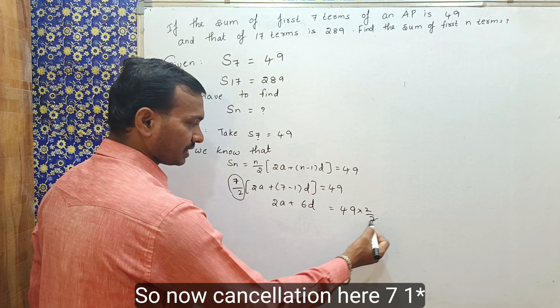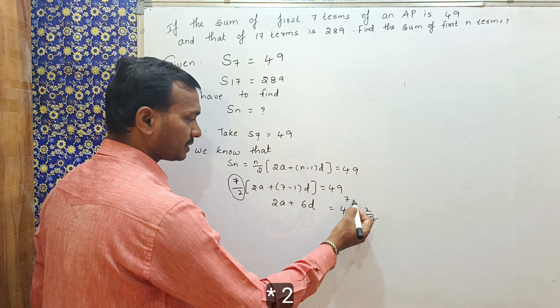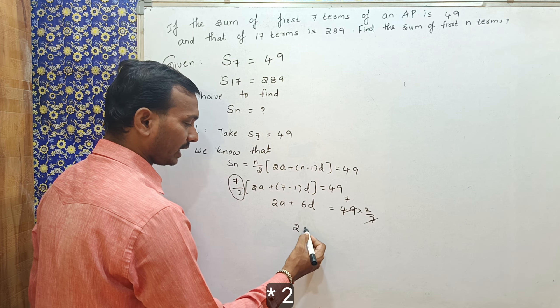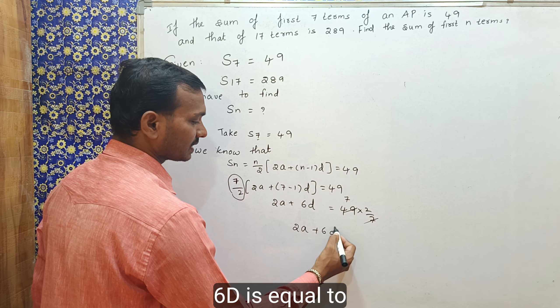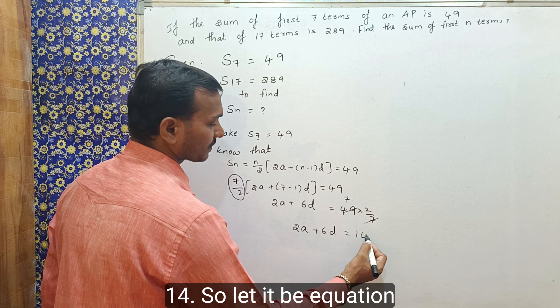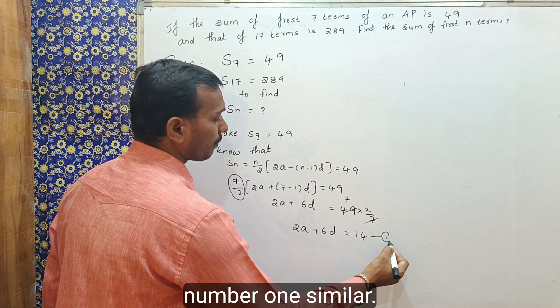So, now cancellation here, 7, 1 times 7, 7 times 2a plus 6d is equal to 40. So, let it be equation number 1.